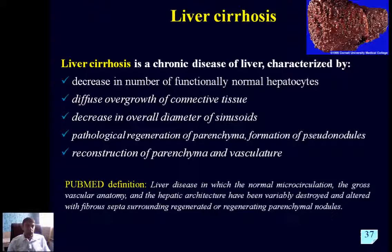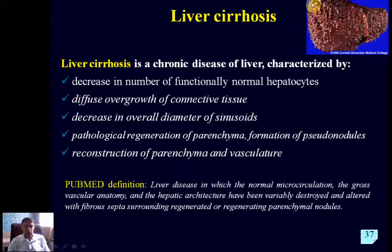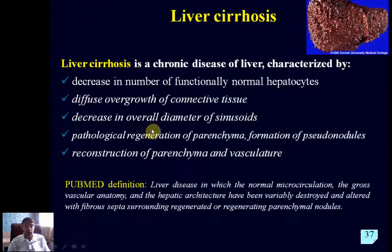Since the liver is very good at regeneration, after damage we have accompanying regeneration of parenchyma, but it is pathological regeneration with formation of pseudonodules — seen not only as a gross picture of many nodules, but also microscopically inside the liver. This results in reconstruction of parenchyma and vasculature.